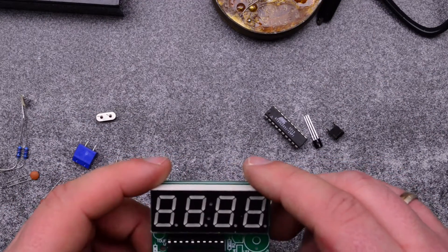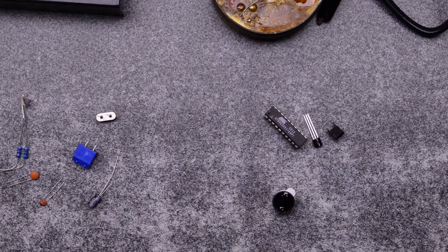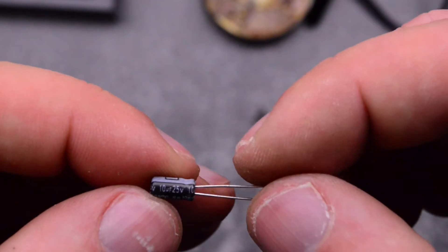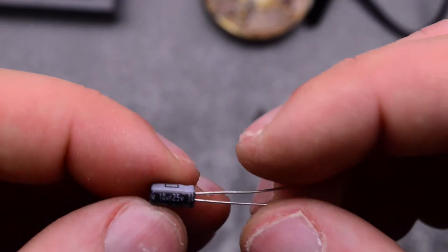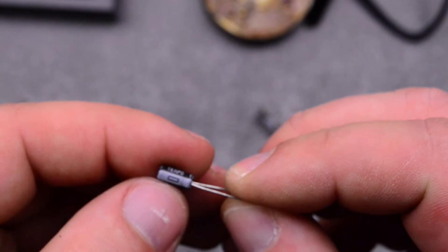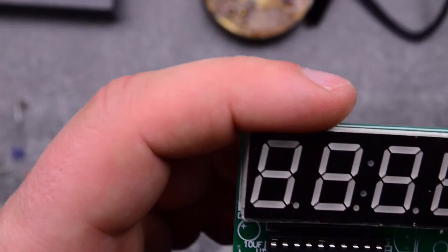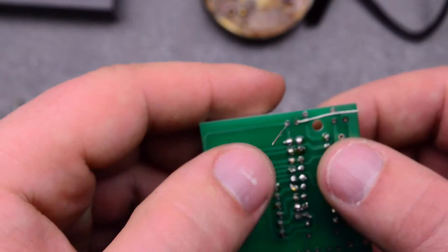After you install your socket, there are a few components which are polar sensitive. 10uF 25V capacitor. The negative side is always going to be shorter. On the negative side it has a strip. Accordingly on the PCB you can see that the positive side is marked. Bend it outwards.